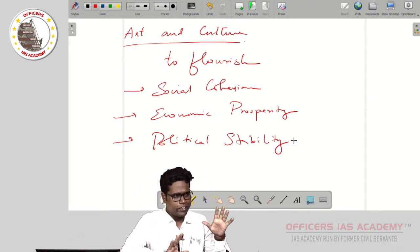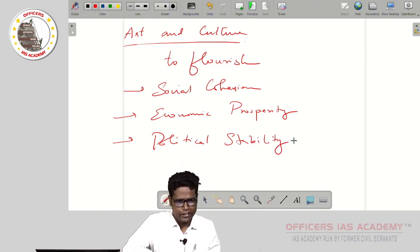Now if you see here, only if the kingdom has political stability can the king or monarch focus on economic prosperity. And only if your society is economically prosperous, where it does not have to struggle for food or basic day-to-day needs, that is when there will be social cohesion or unity in the society.